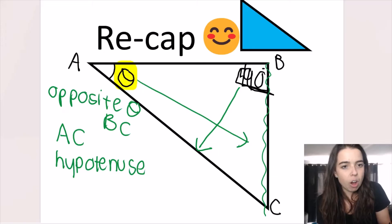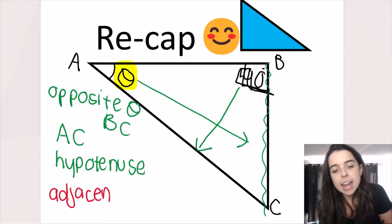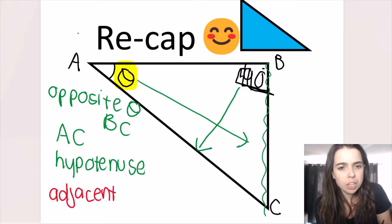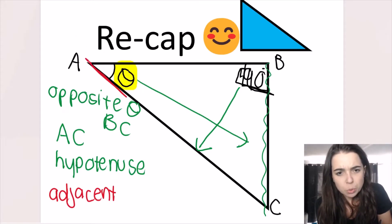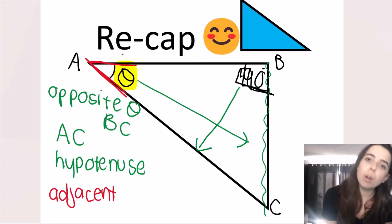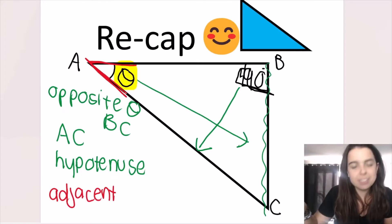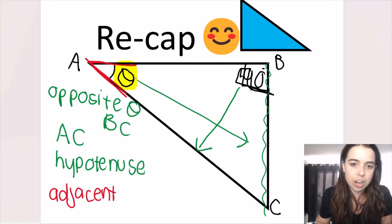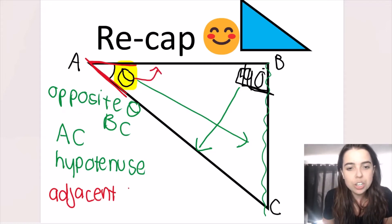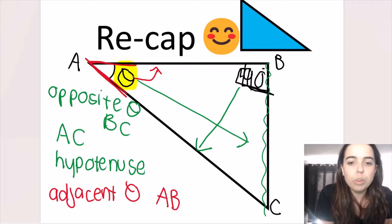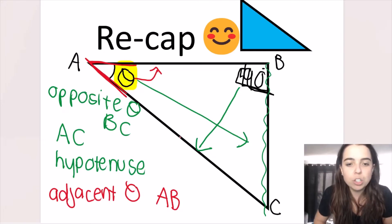There's another word you need to be familiar with: adjacent, which means next to. If I ask what side of the triangle is adjacent to theta, theta is wedged between AC and AB, meaning it is next to those sides. However, we don't call the hypotenuse the adjacent — that's a special side. So the adjacent side, the side next to theta, is AB. In summary, with respect to theta: opposite is BC, adjacent is AB, and the hypotenuse is AC.